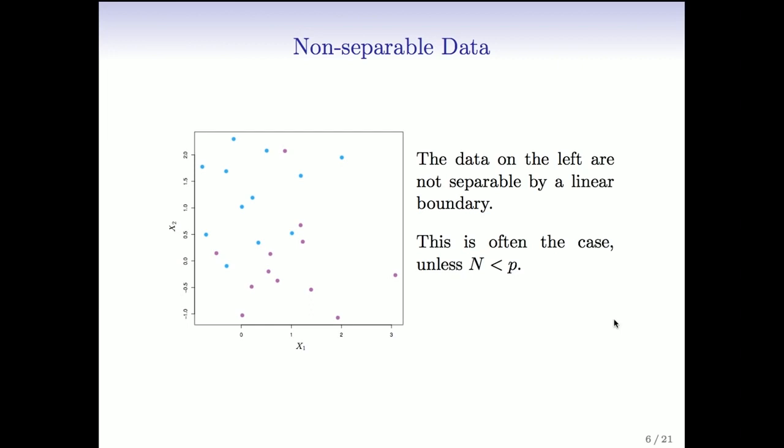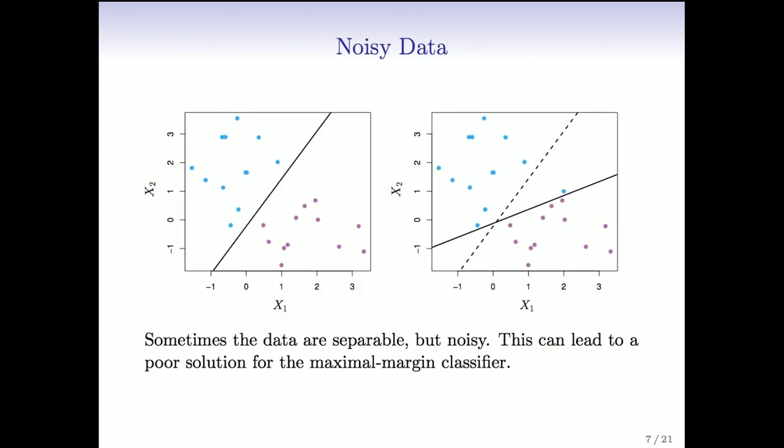On the other hand, for a lot of wide data, like in genomics and other kinds of problems, the number of sample points is less than the dimensions. And in general, when the number of sample points is less than the dimensions, you can always separate the data with a hyperplane. But when N is much bigger than p, typically not. So that's a problem we need to deal with.